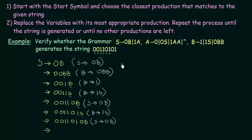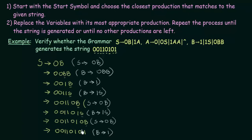Moving on, we already got this 0. The next symbol I need is a 1, and the variable I have is B. I need to get 1 from B. Since this is the last symbol, I can use the production B gives 1. So I replace this B with 1. Now we see that we have generated the string 00110101, which is the same as the required string. So using this grammar we could generate the string 00110101 — this string belongs to this grammar.